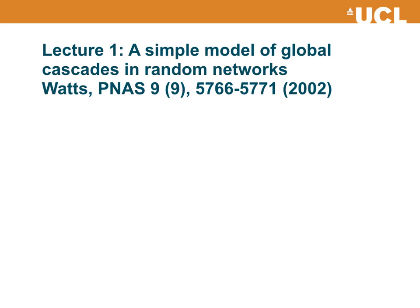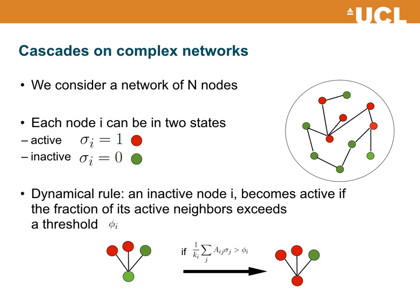The first lecture will be about the model of global cascades introduced by Duncan Watts. The model is relatively simple, but it has a rich phenomenology, so it is quite useful and important. In the model we have a population of N agents interacting in a network. Each node in the network can be in any of two states, either active or inactive.